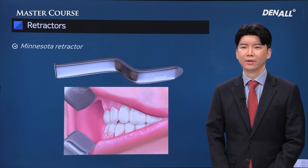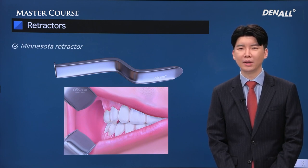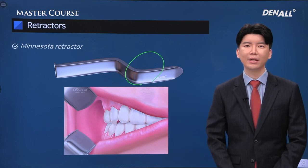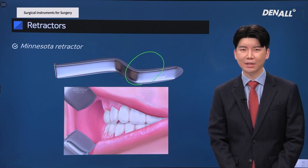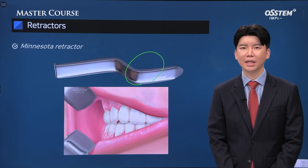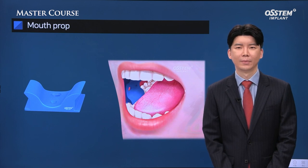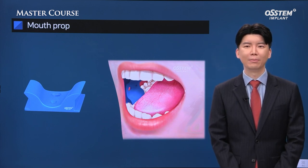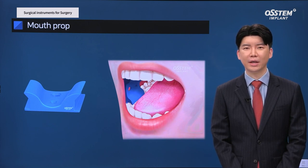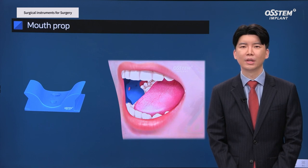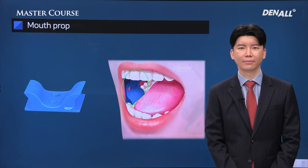The Minnesota retractor is a very useful tool for reflecting and maintaining a flap, but its size is quite significant, so it cannot be used in tight surgical sites. You need to use these three different retractors depending on the situation and your preference. For implant surgery, depending on the extent, surgical time can be short or long. Over time, the patient's ability to open their mouth will be reduced, and visibility will decrease. Therefore, use of a mouth prop is strongly recommended.